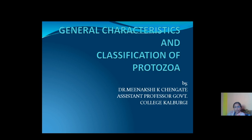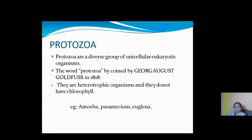Dear students, today I am going to discuss the topic of General Characters and Classification of Protozoa. Before going to the General Characters, we should first know the unique characters of Protozoa. The first unique character is that Protozoa are unicellular organisms. This unicellular type of organism is seen only in Protozoa, not in other phylums.